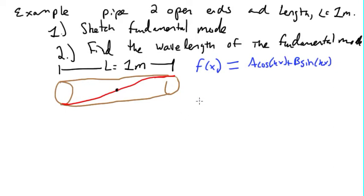Okay, so what we need to do is we need to take a derivative of f of x because we have two open ends. So the boundary conditions are going to require us to take derivatives. So df of x over dx equals minus Ak sine kx plus Bk cosine kx. The derivative of sine is cosine. The derivative of cosine is minus sine. The derivative of any co-function is negative.